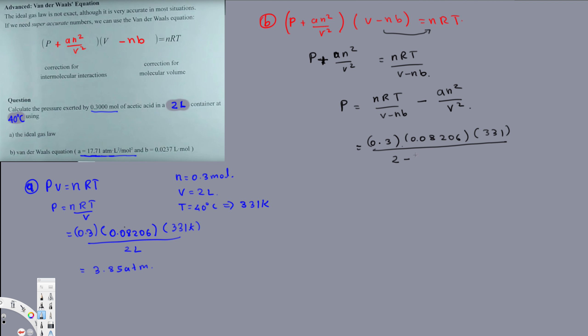0.3 times B, so B here is 0.02370 liter per mole, so that's what I'm going to use, 0.02370. Then minus a, this one, this value that's provided, 17.71. So this is going to be 17.71 multiplied by n squared, that is 0.3 squared, divided by 2 squared. Volume is 2 liters so 2 squared.